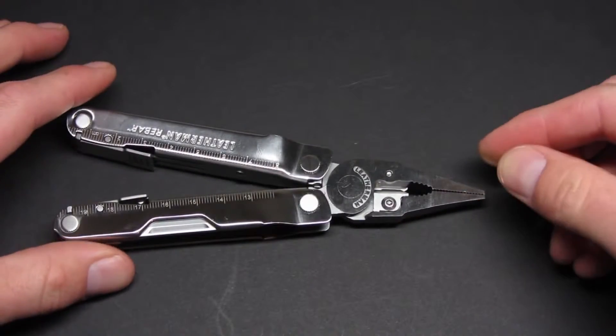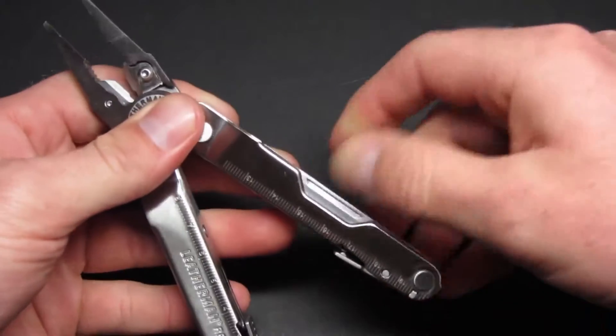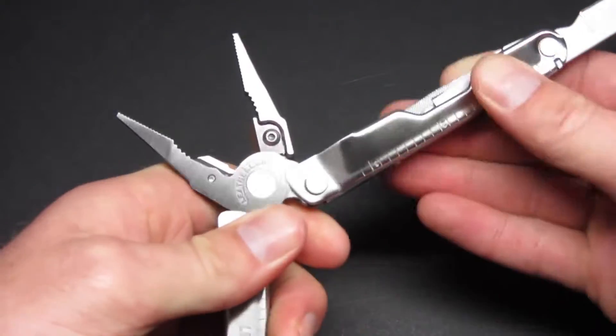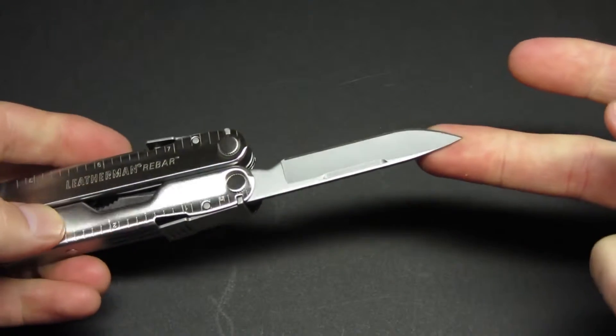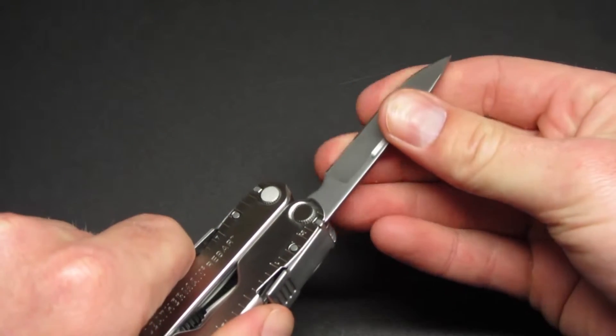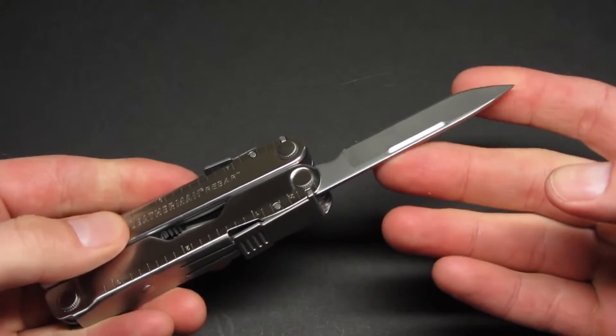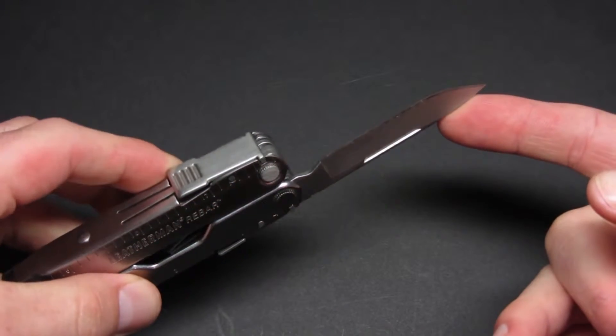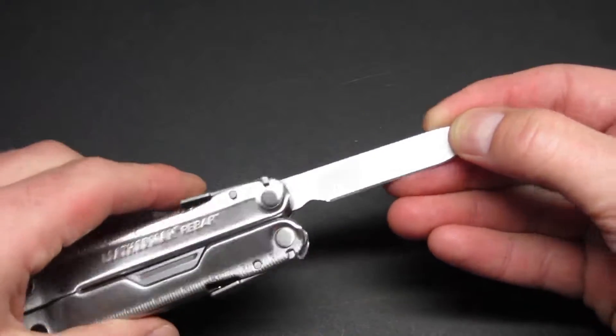As far as the tool set, it's pretty standard. You have a 440 HC blade, plain edge. The blade design is really cool looking, really useful for cutting, great slicer. Came pretty sharp out of the box for paper slicing, probably not phone book paper slicing. To be honest, I usually don't use the blades on multi-tools, but I did cut a little bit with this one and found it to be pretty sharp.